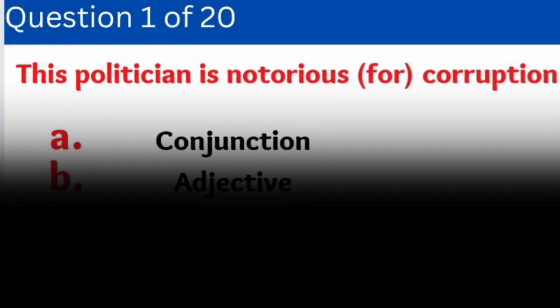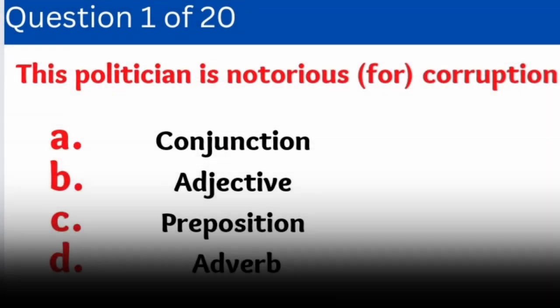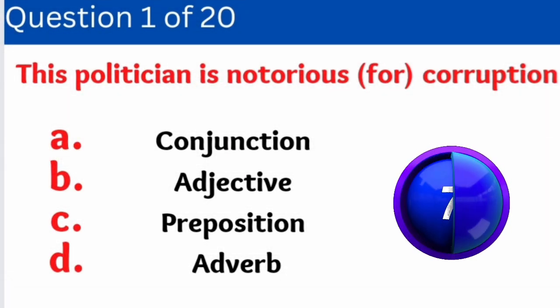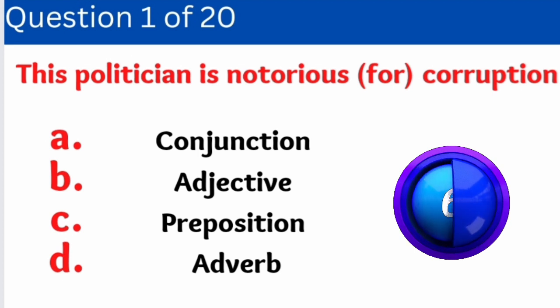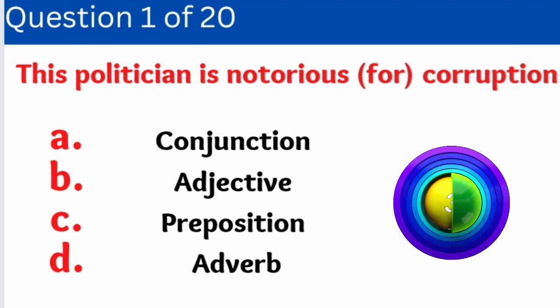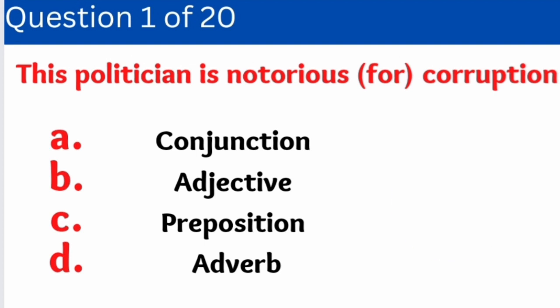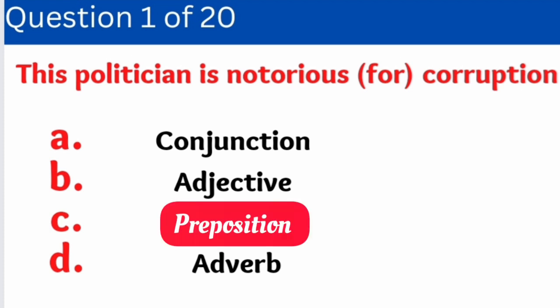Question number one is: 'This politician is notorious for corruption.' Here we have to identify the word — how it is used. Options are: A. Conjunction, B. Adjective, C. Preposition, D. Adverb. And the correct answer is option C — Preposition.